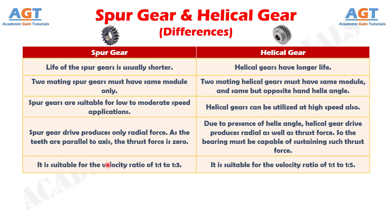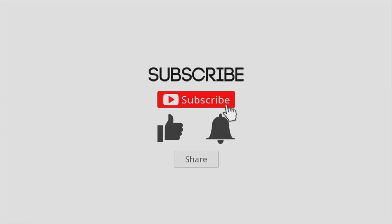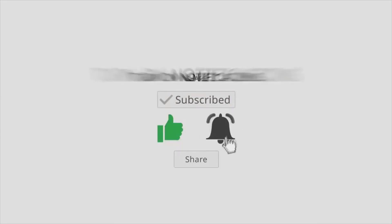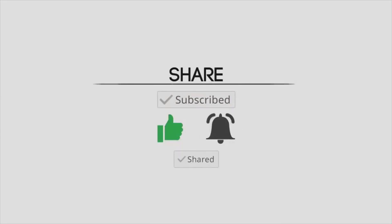Difference number 11: Spur gear drive is suitable for a velocity ratio of 1:1 to 1:3, whereas helical gear drive is suitable for a velocity ratio of 1:1 to 1:5.